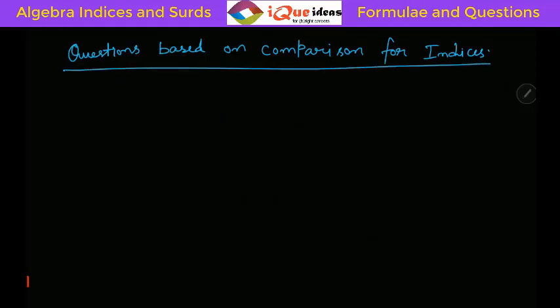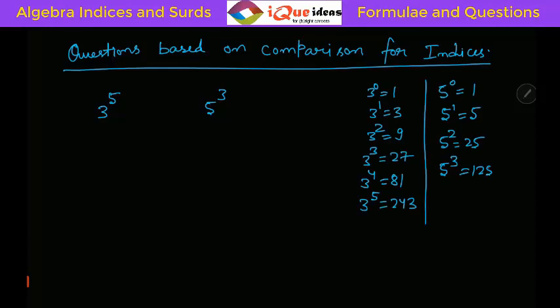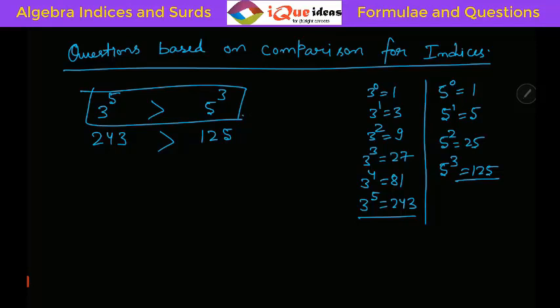Let us take up some questions based on comparison of indices. Starting with: which is larger, 3 raised to the power 5 or 5 raised to the power 3? We can simply use the values. 3 raised to 5 is 243, and 5 raised to 3 is 125. Since 243 is greater than 125, 3 raised to 5 is greater than 5 raised to 3.